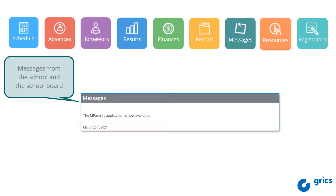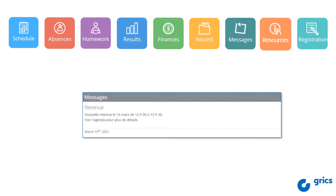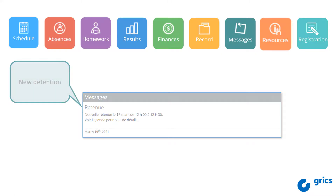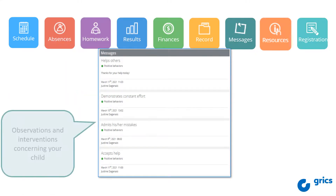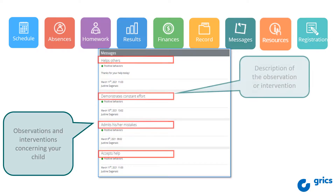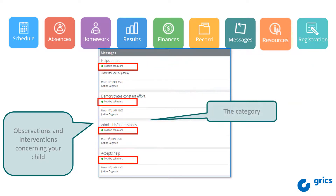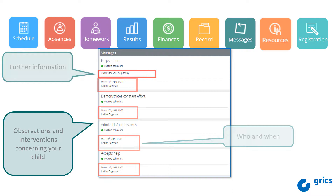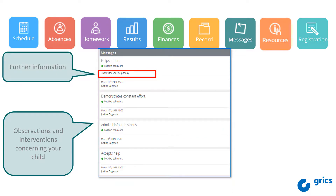However, messages published by the school or the school board are not signed by a person. If your child is called to detention, you will receive the information through the messages tile. The school also has the possibility of informing you of observations and interventions concerning your child. This type of message includes the description of the observation or the intervention, the category, who wrote the information and when. Some additional information might also be available.